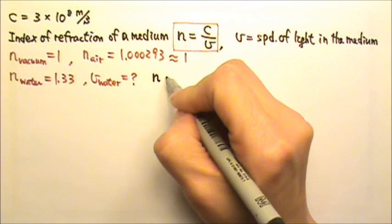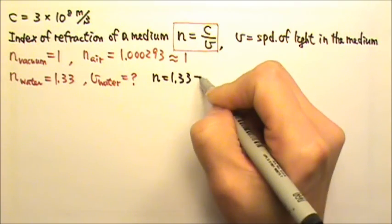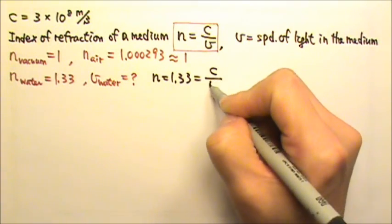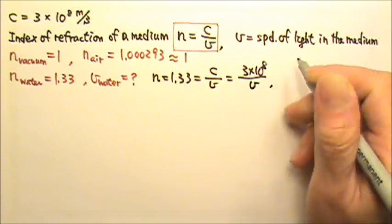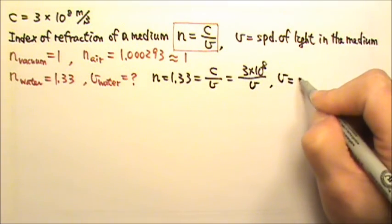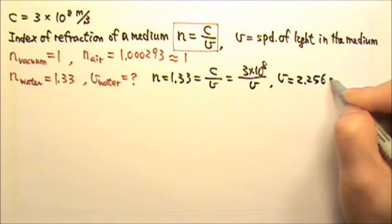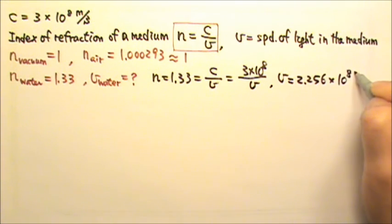So N is 1.33, which is C over V, 3 times 10 to the 8th divided by V. So we'll get V to be 2.256 times 10 to the 8th meters per second.